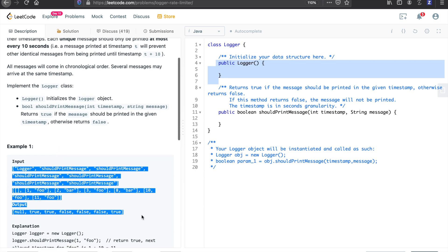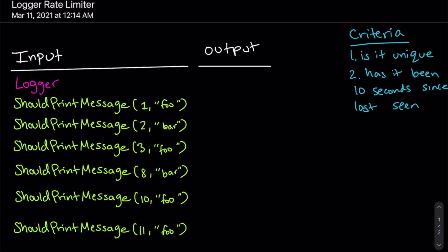Looking at the example more in depth: all we're trying to do is figure out if we should print our message — true if we can, false if we can't. The criteria are: one, the message must be unique, and two, if it isn't unique, it must have been 10 seconds since we last saw that message.